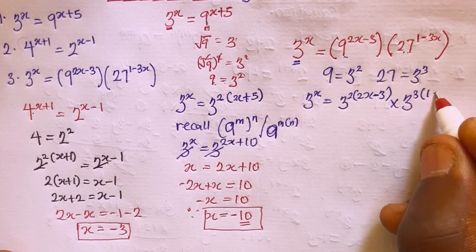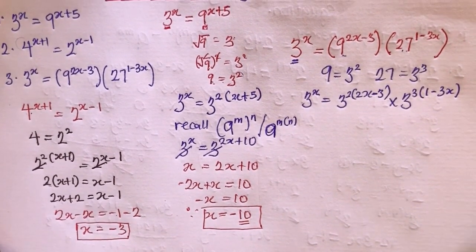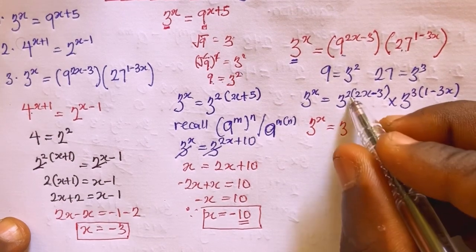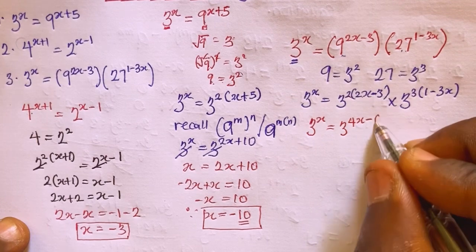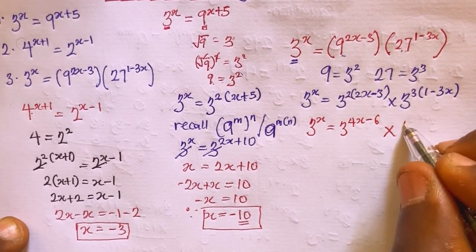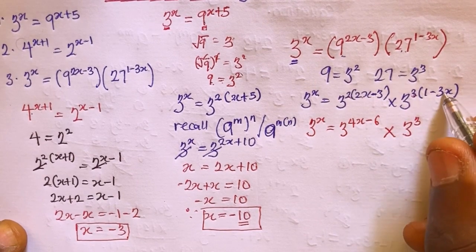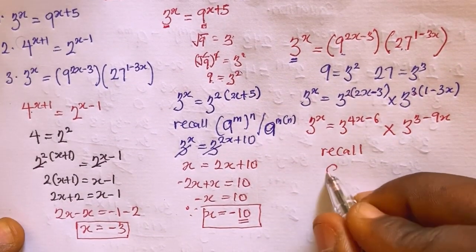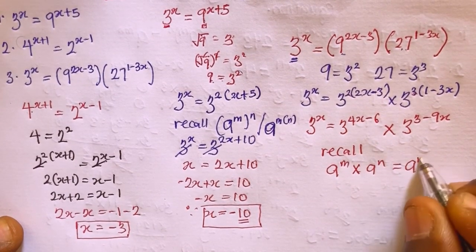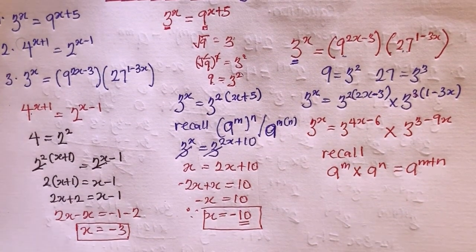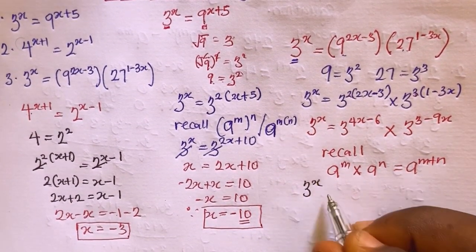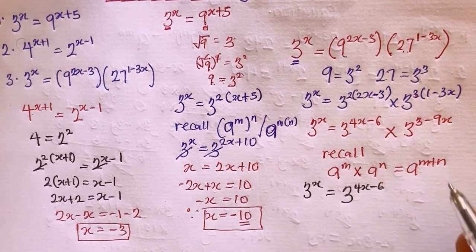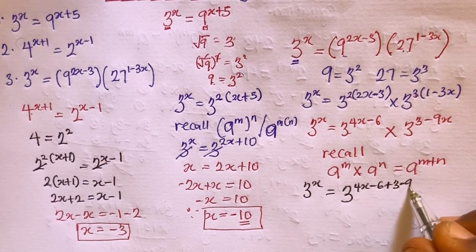Expanding: 3 raised to x equals 3 raised to the power 4x minus 6, multiplied by 3 raised to the power 3 minus 9x. Using the law that a raised to m times a raised to n equals a raised to m plus n, I combine these into a single base: 3 raised to x equals 3 raised to the power 4x minus 6 plus 3 minus 9x.